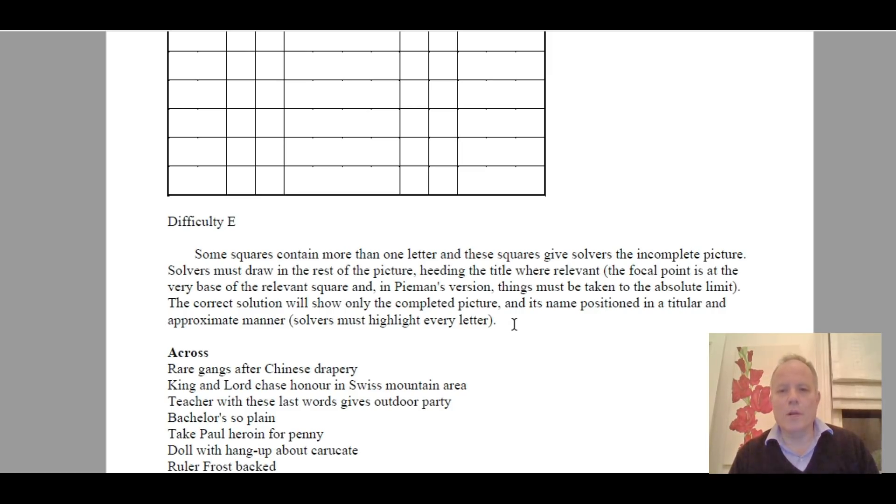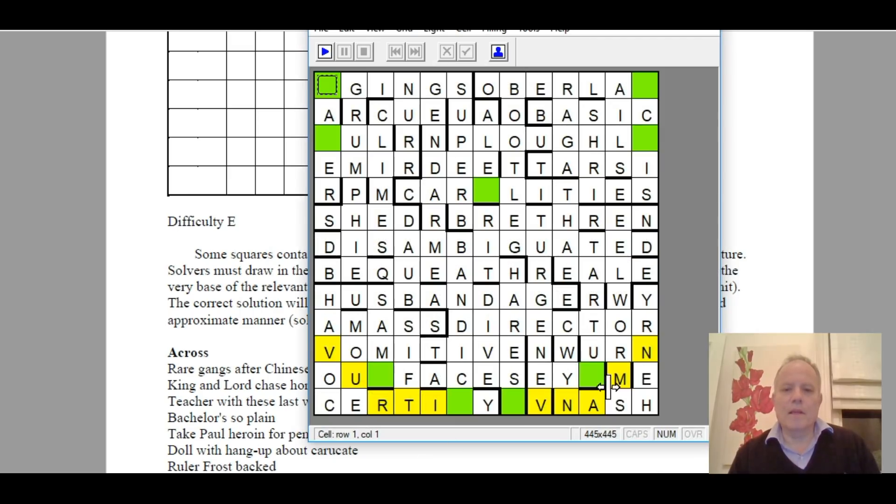Which said solvers must draw in the rest of the picture, heeding the title where relevant—so that's Circling the Square, the title, which by the way is a reference to a very famous listener puzzle called Squaring the Circle, which was extraordinarily difficult, no doubt Simon's inspiration. The focal point, now that must be the navel, is at the very base of the relevant square. And in Pieman's version, things must be taken to the absolute limit. The correct solution will show only the completed picture and its name positioned in a titular and approximate manner. Solvers must highlight every letter. But what can that mean? So here, if you draw the circle that is like the circle that surrounds the Vitruvian Man, it goes outside the grid, so we truly are thinking outside the box already.